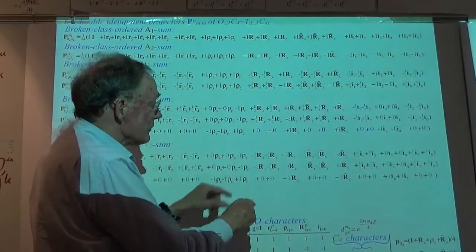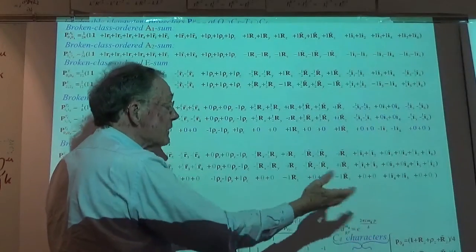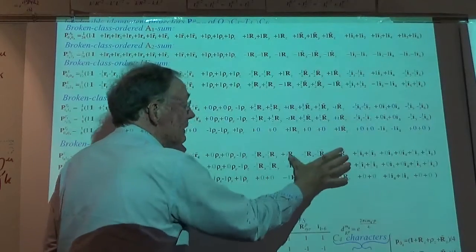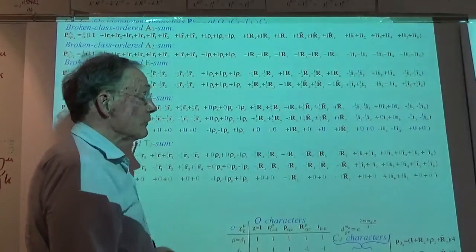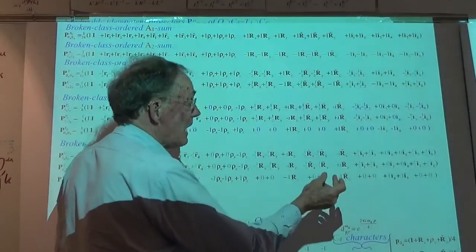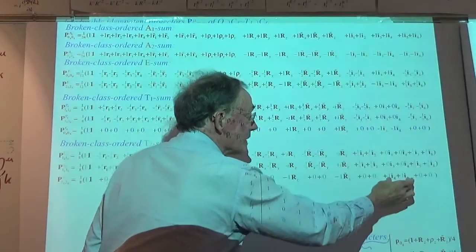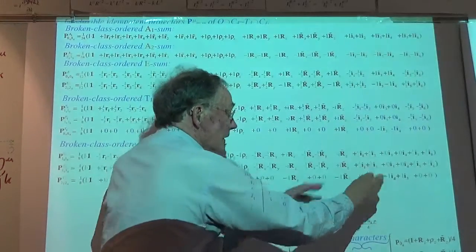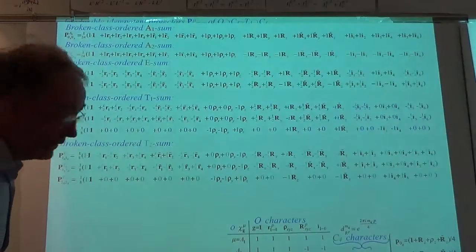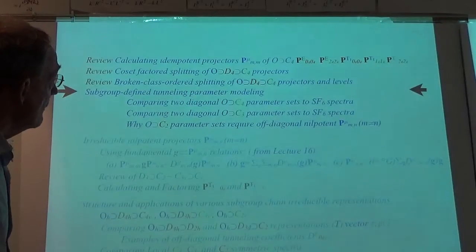Another way to describe it is in terms of broken classes. The classes of 120 degrees break in half, and the 180s on X, Y, and Z break into X and Y, with Z left out. There's a similar breakup for others as well. The basic idea is there are ten of these projectors — ten broken classes needed for a complete orthonormal linear relationship.